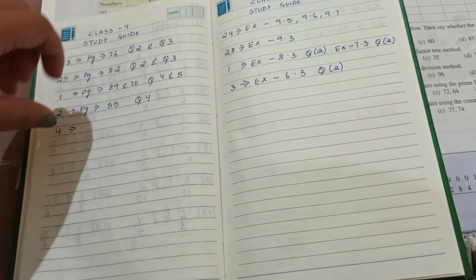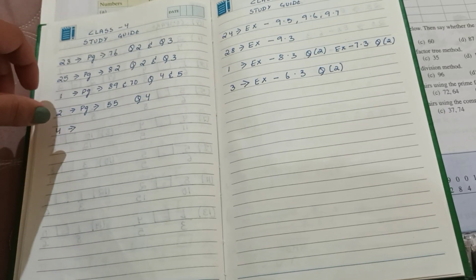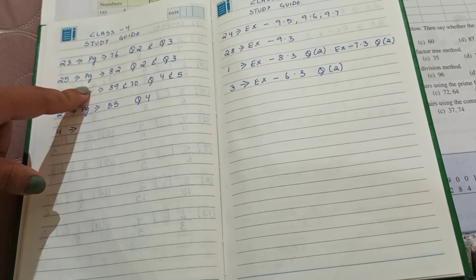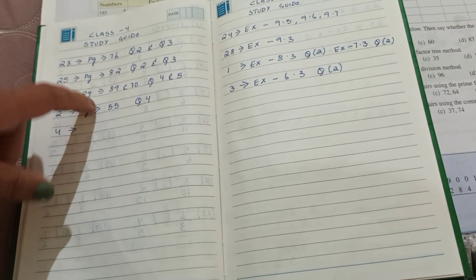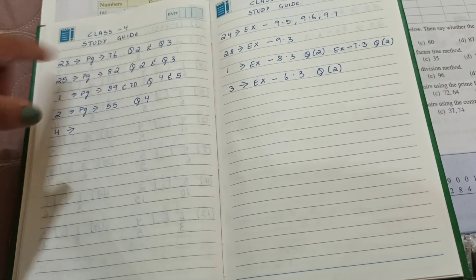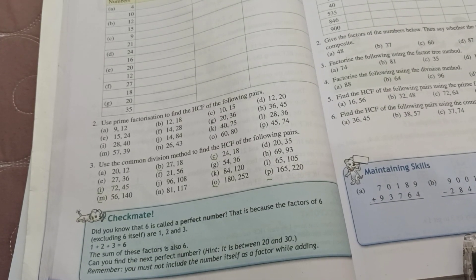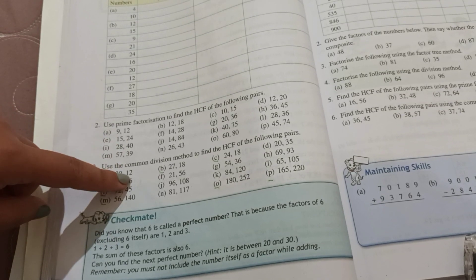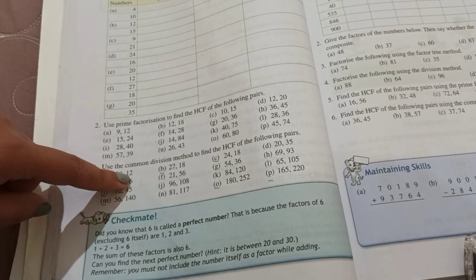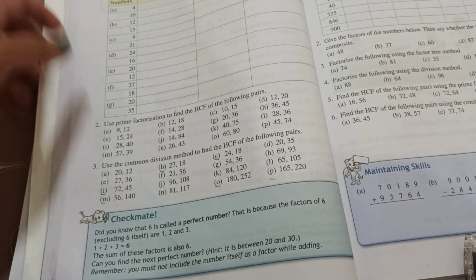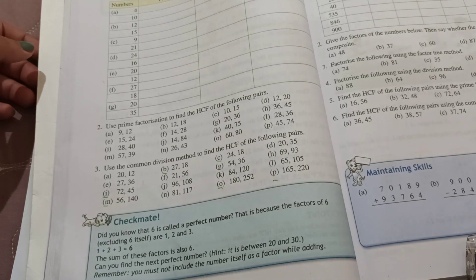Next class, join revision class 2. Okay, join in page 76, question number 2 and 3. He can revise. Page 76, question number 2 and 3. He can revise. In textbook.